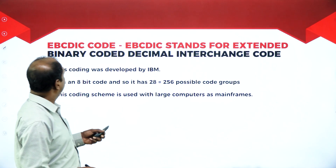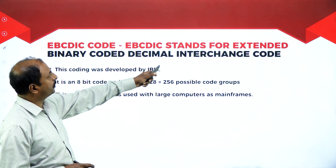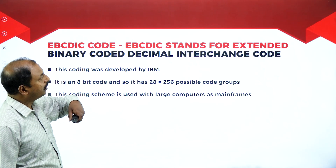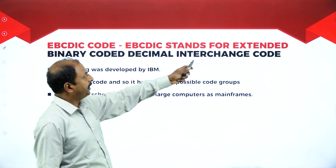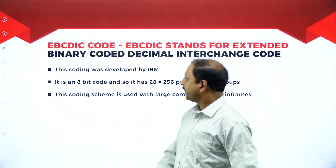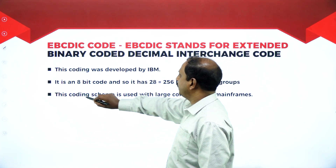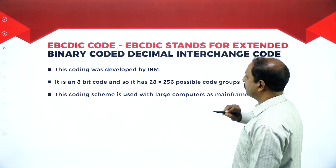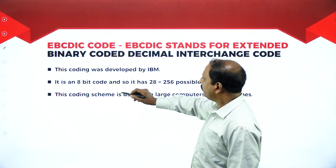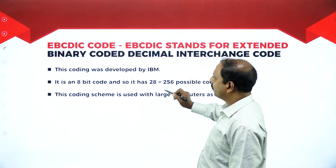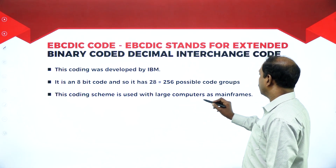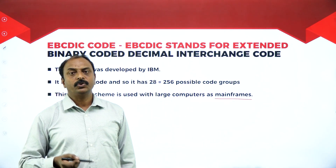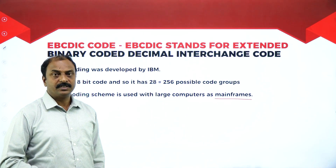The next coding system is EBCDIC — Extended Binary Coded Decimal Interchange Code. This coding was developed by IBM. It is an 8-bit code with 256 possible coding groups. This coding scheme is used with large computers such as mainframes — EBCDIC is normally used in mainframe computers.